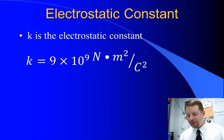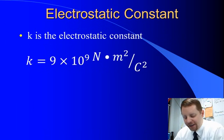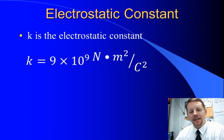So, let's see how this looks. The electrostatic constant, K, is given as 9 times 10 to the 9th, Newton times meters squared, per Coulomb squared.